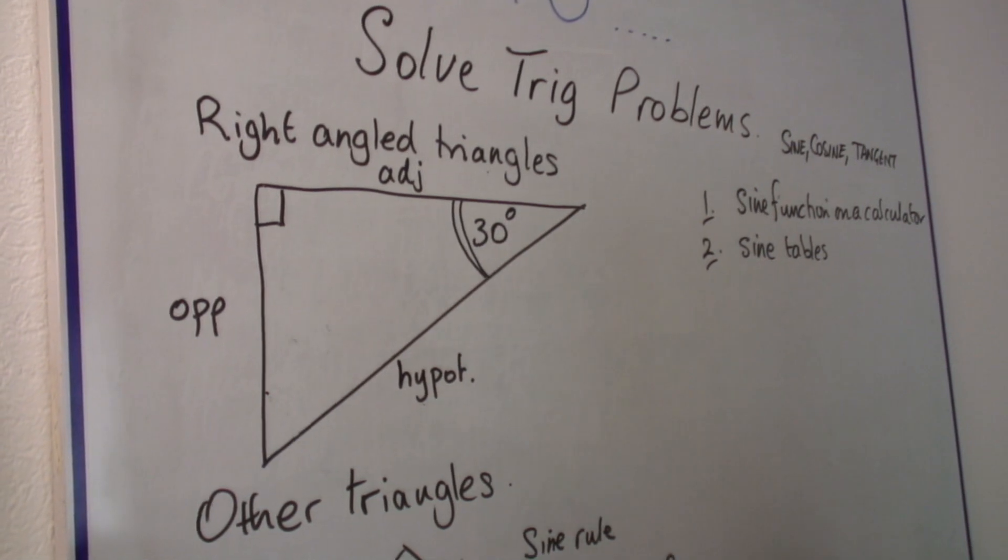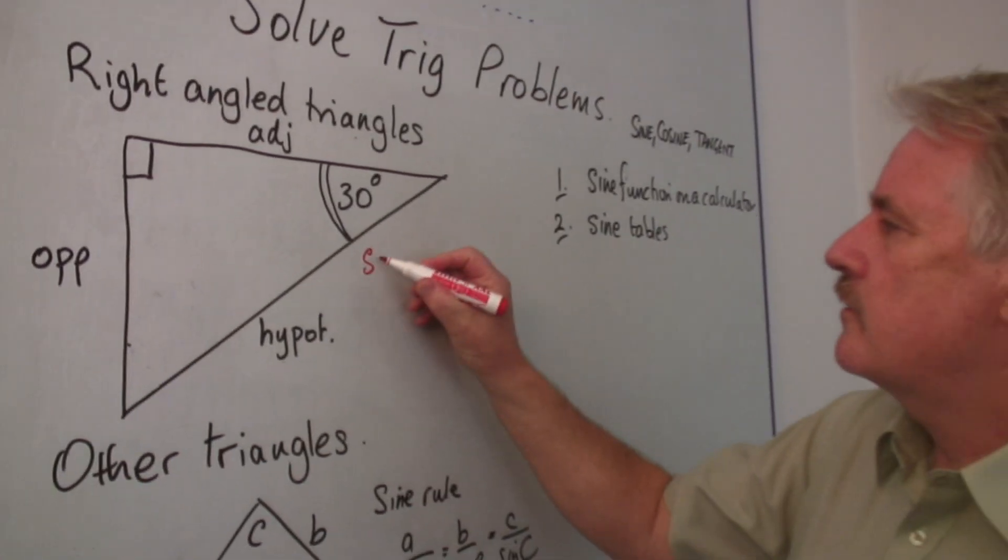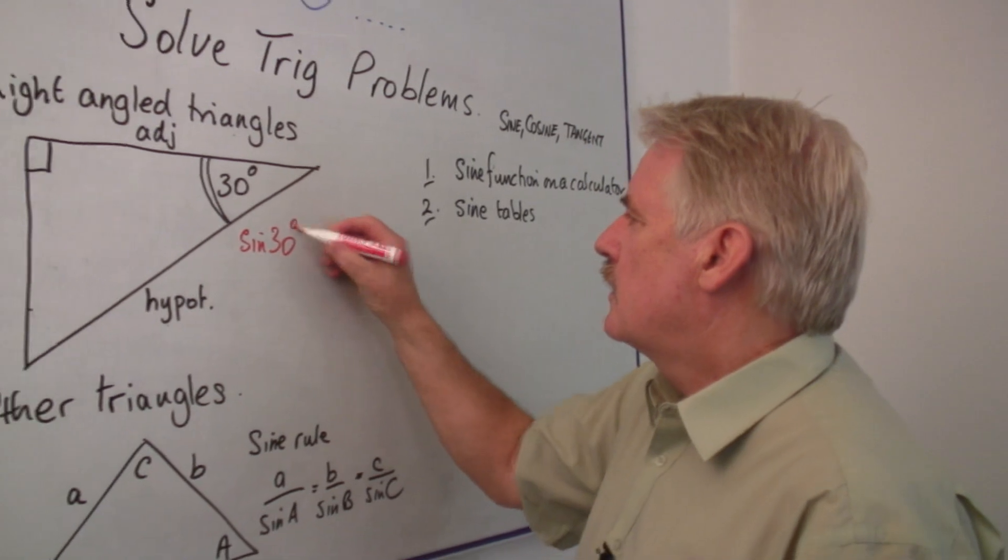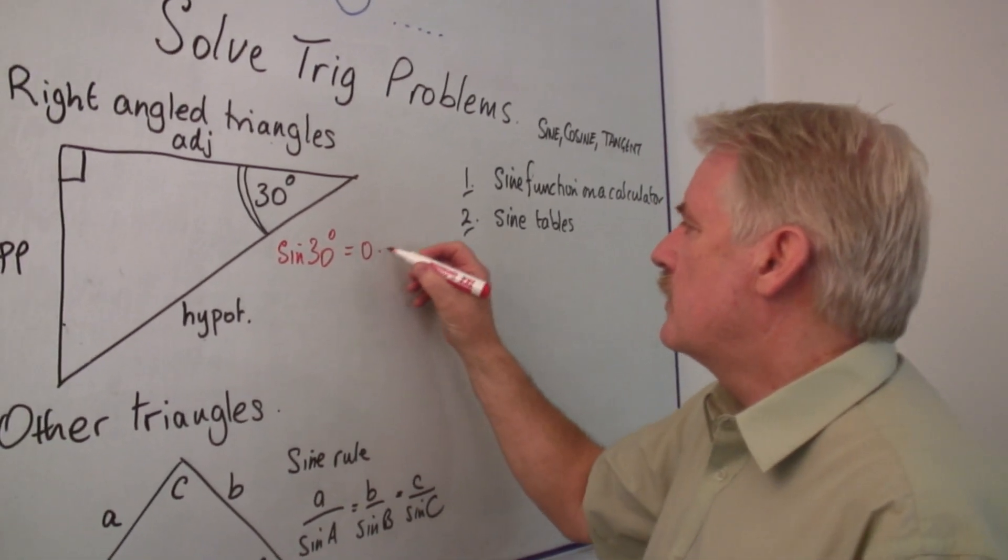We're using the angle of 30 degrees because we know sine of 30 degrees is an easy one. It is in fact 0.5.